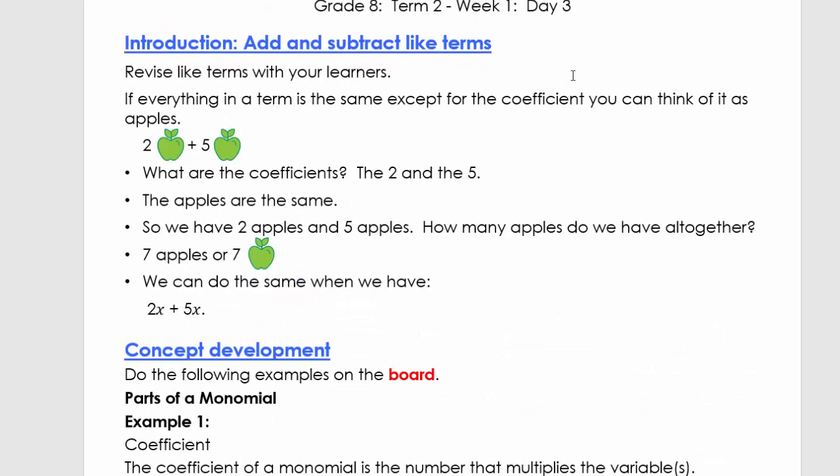Today we're going to look at add and subtract like terms. We're going to make use of apples, so everything in a term is the same except for the coefficient. What we have here is two apples plus five apples. What are the coefficients? The coefficients are two and the five, but the apples are the same. So how many apples do we have altogether? Seven apples.